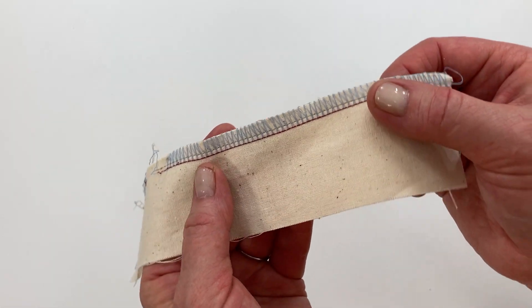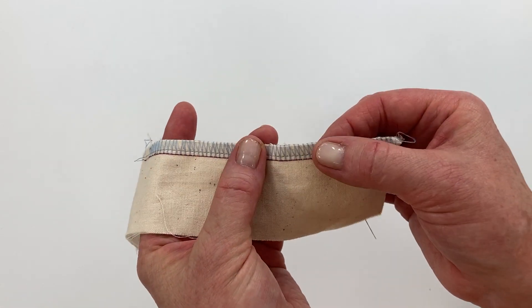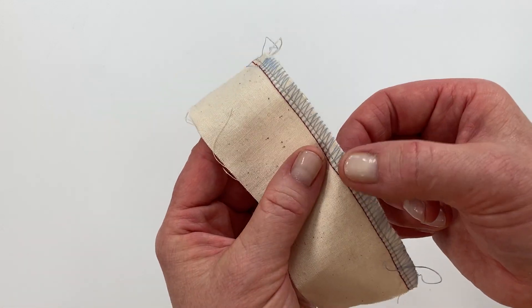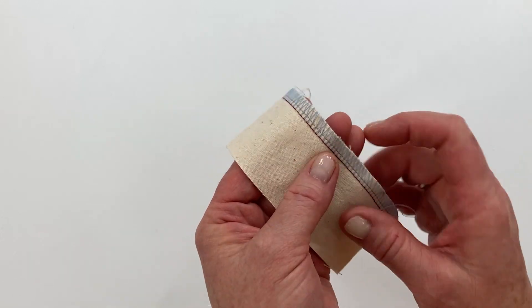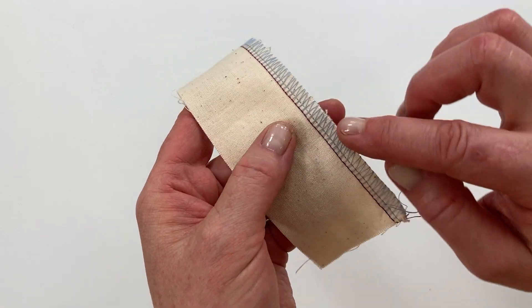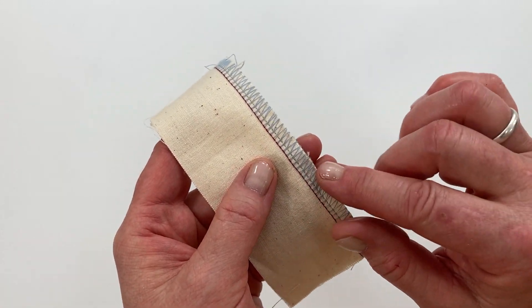An overlock stitch will have either three or four threads and stitches. This is a four thread stitch and I have put a separate color for each of the stitches so you can see where it is that you need to unpick.